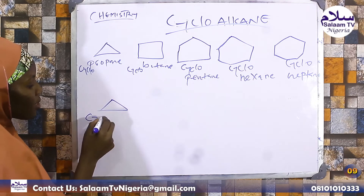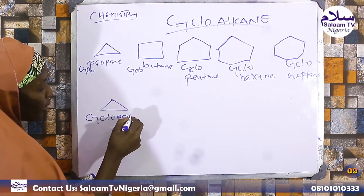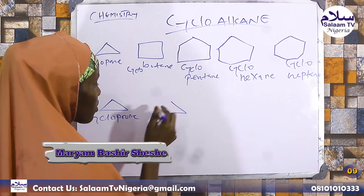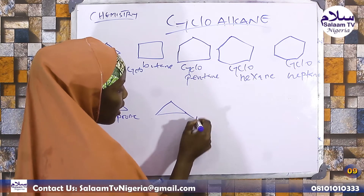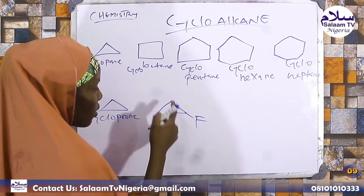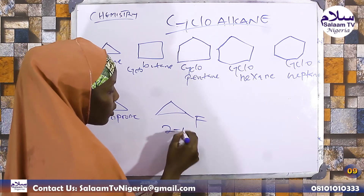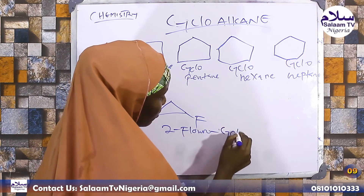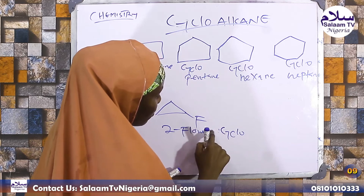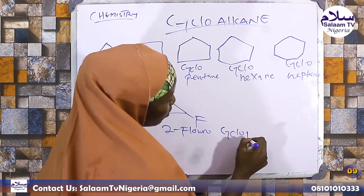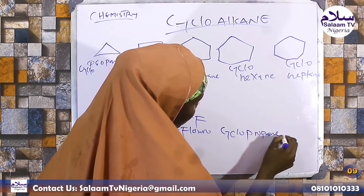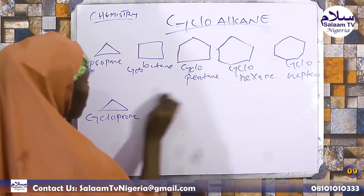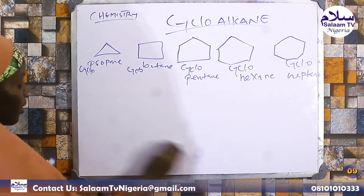The name cyclopropane — if it doesn't have a substituent, that's fine. But if it does have a substituent, we name it accordingly. For example: 1,2-difluorocyclopropane — two fluoro substituents on cyclopropane. That is how we name those two examples.